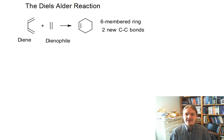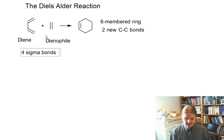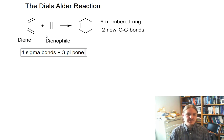If we look at this reaction from a thermodynamic standpoint, on the reactant side we have four sigma bonds and three pi bonds, seven total covalent bonds.